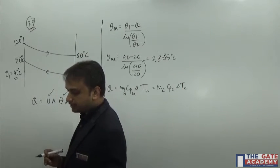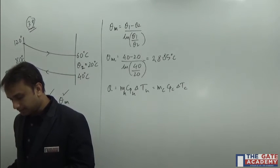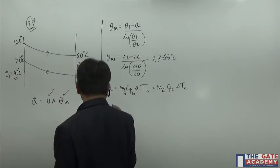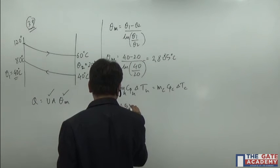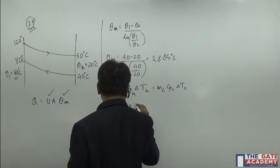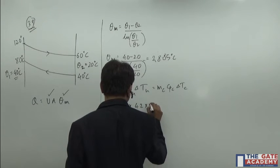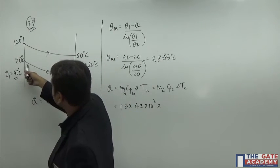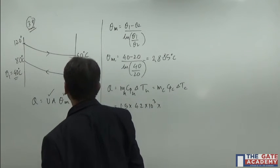What is mh? It is 1.5 kg per second mass flow rate. So 1.5, and cp of water is 4.2 into 10 to the power 3, which is 4200. Delta th is the difference between the exit and inlet temperature of water.